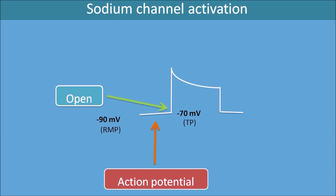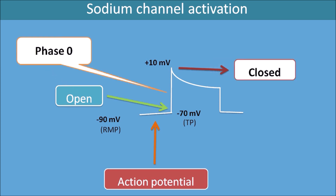At minus 70 millivolts, the voltage-gated sodium channels open, causing a sudden increase in membrane potential up to plus 10 millivolts, resulting in depolarization of the cardiac cells. At plus 10 millivolts, the voltage-gated sodium channels are closed. Phase 0 involves these fast-acting sodium channels, which open at minus 70 millivolts and close at plus 10 millivolts — that is why they are called voltage-gated sodium channels. Class 1 drugs act on this phase 0 rapid depolarization phase.